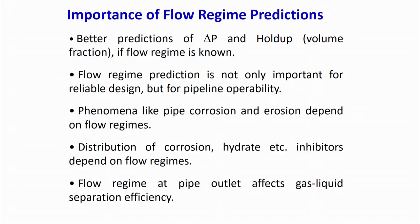In single-phase flow, if Reynolds number is more than 4200 the flow is turbulent; if less than 2000, it is laminar. This kind of universal definition is not available in multi-phase flow, making the field very challenging and interesting, because flow regimes change very swiftly if you change any parameter. Today we are going to discuss the flow map — flow pattern map — covering gas-liquid flow pattern, and then liquid-solid and gas-solid.